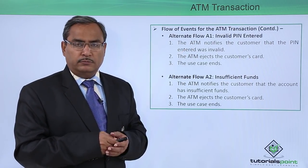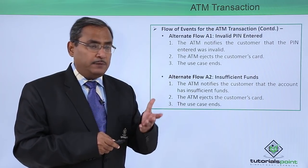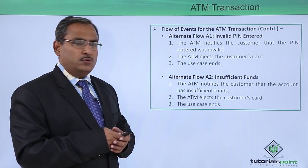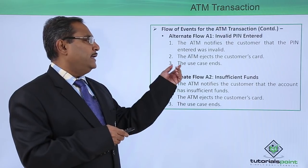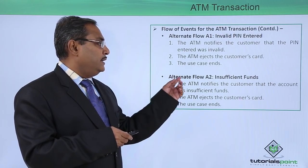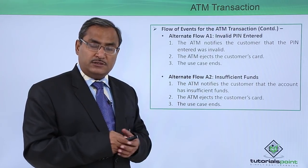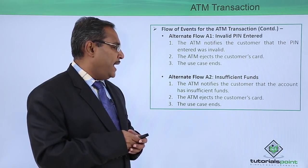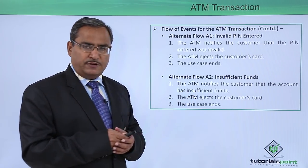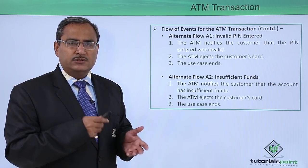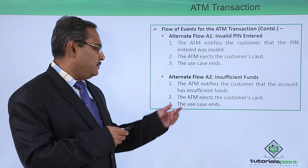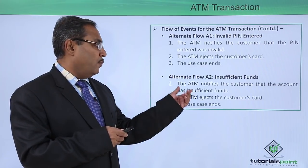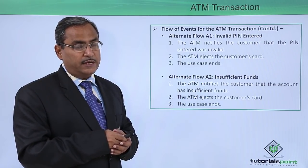Alternate flow A1 is for an invalid PIN: the ATM notifies the customer that the PIN entered was invalid, ejects the customer's card, and the use case ends. Alternate flow A2 is for insufficient funds: the ATM notifies the customer that the account has insufficient funds to support the requested amount, ejects the customer's card, and the use case ends.